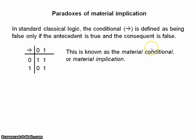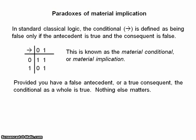Material implication is just truth functional. The truth of the whole conditional is a function of the truth of its parts. So, as long as you have either a false antecedent or a true consequent, then you have a true conditional. Nothing else matters. Just the truth value.